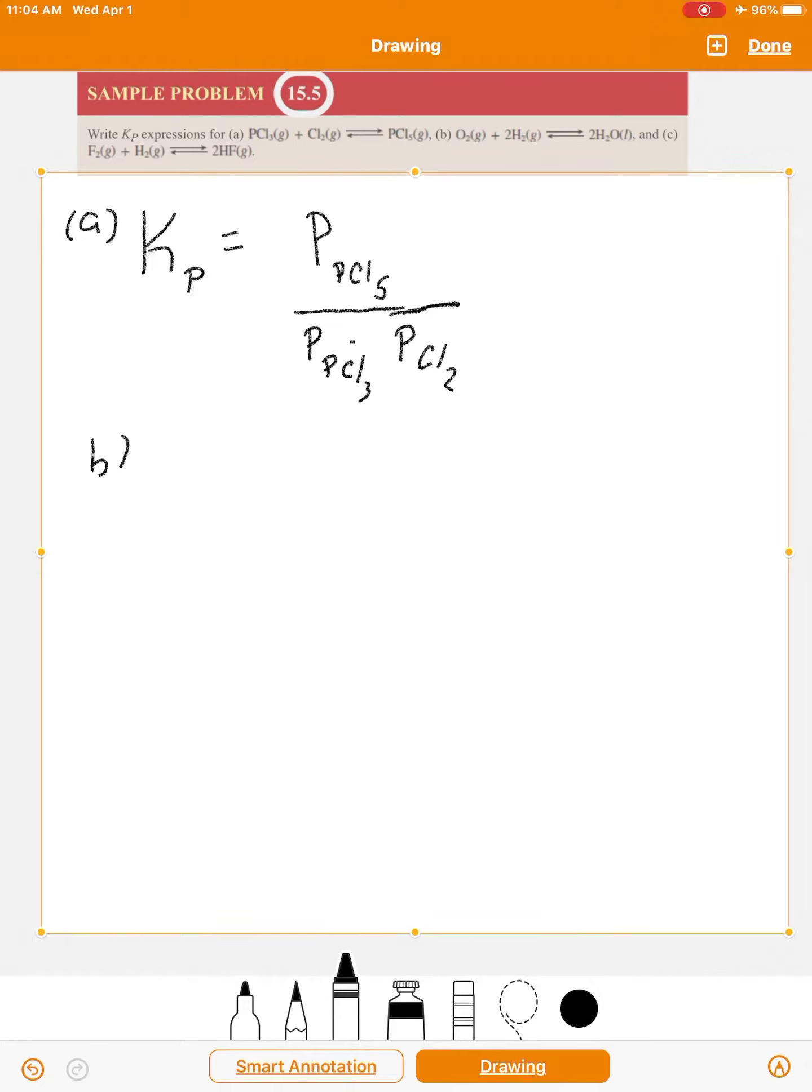Let's try B. Now we have a liquid on the product side. Remember, liquids don't get included, nor do solids. So if there's only a product and the product's a liquid, we just put 1.